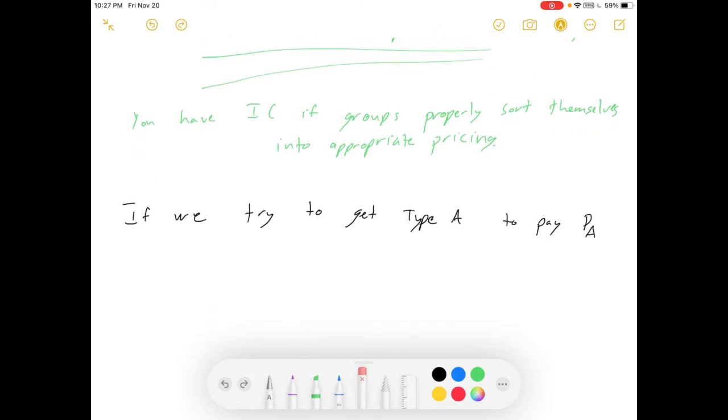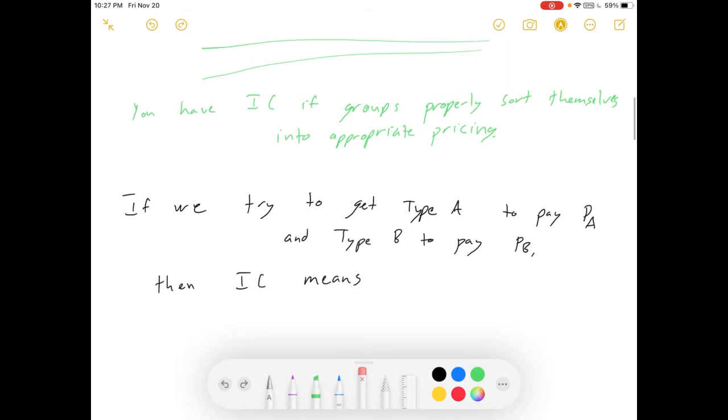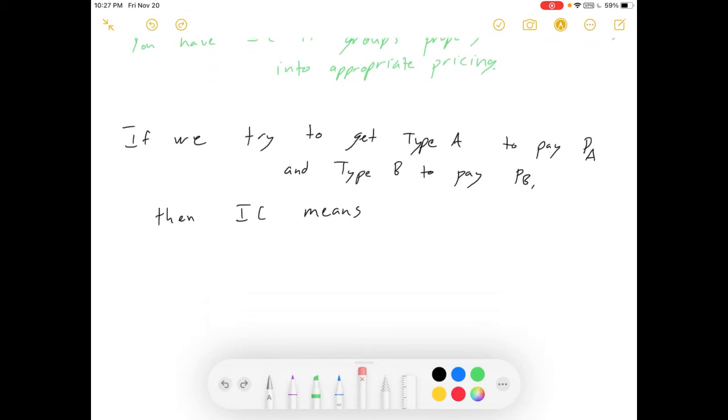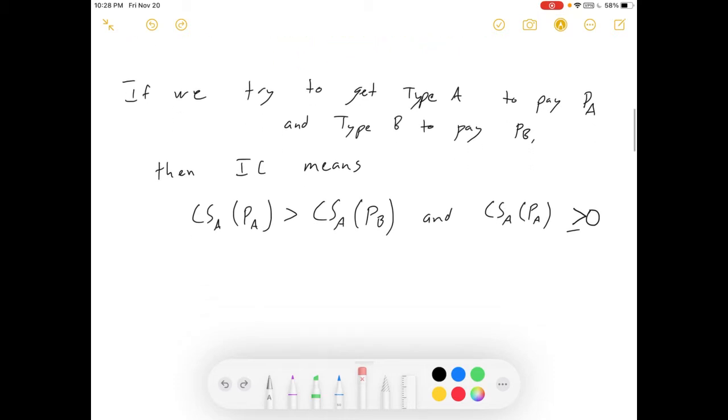So, if we try to get type A consumers to pay price A, and type B consumers to pay price B, then incentive compatible means four things. It means that the consumer surplus for consumer A from paying price A is greater than the consumer surplus of type A from paying price B. That's the self-selecting for consumer A. They prefer price A. We also need that the consumer surplus for type A of paying price A is greater than or equal to zero, so that they're willing to pay for it. So, it's better than B, and it's better than nothing. Consumer A is in.